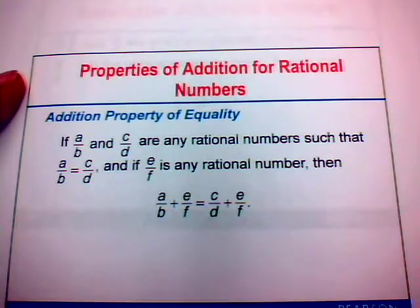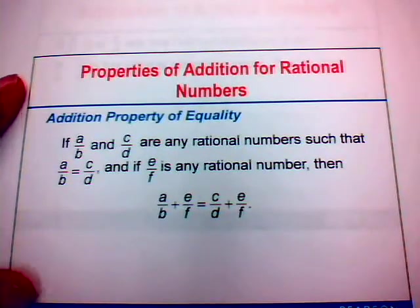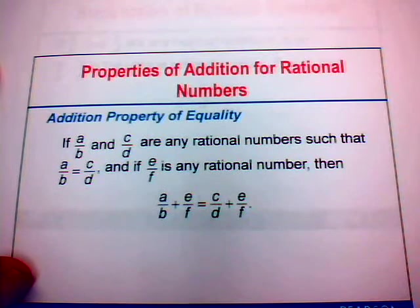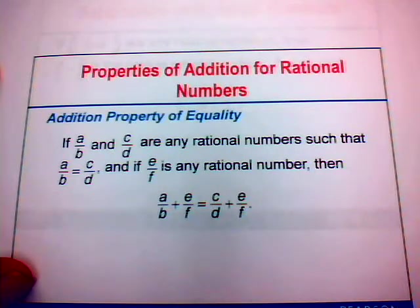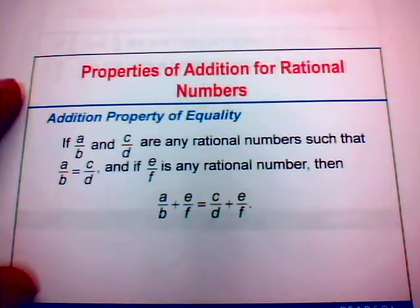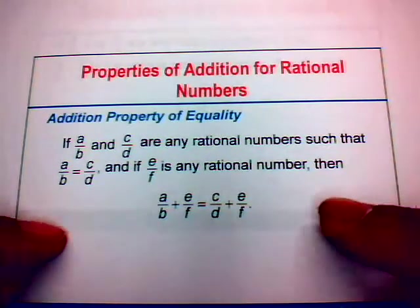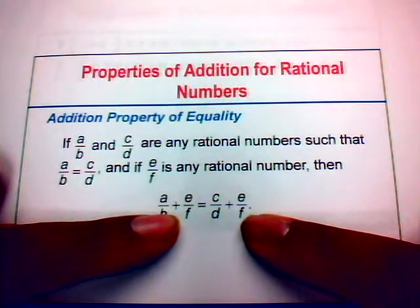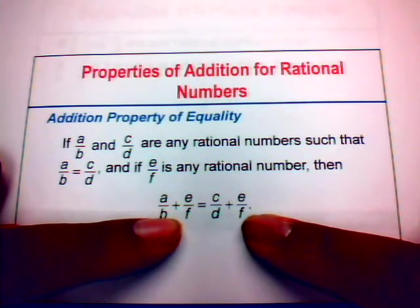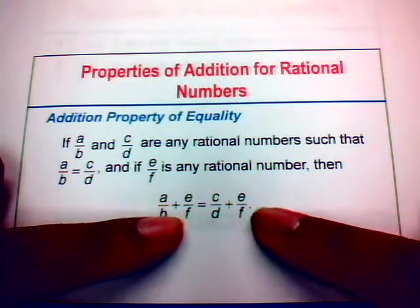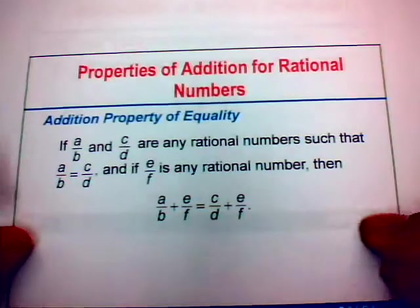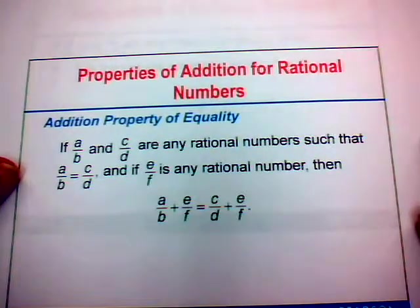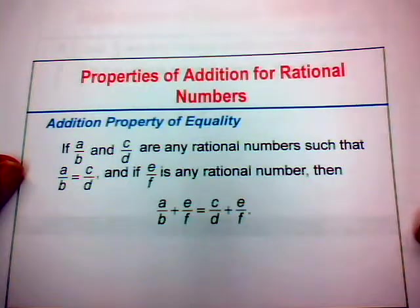Next is the addition property of equality: if a over b and c over d are any rational numbers such that a over b equals c over d, and if e over f is any rational number, then we can add that same rational number e over f to both sides of the equality. Because e over f is being added to both sides, you will still get a true equality.